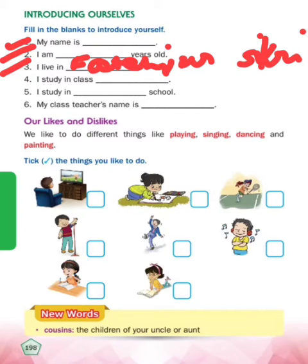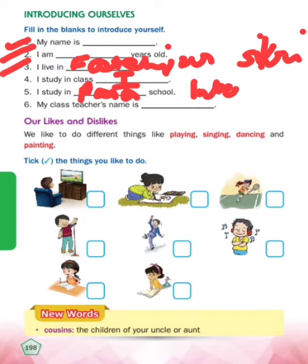I study in Class 1. I study in dash school - you study in which school? Rasa International School, so write down Rasa International School. My class teacher name is dash - you need to leave this blank for now, because later on we will tell you about your class teacher's name.